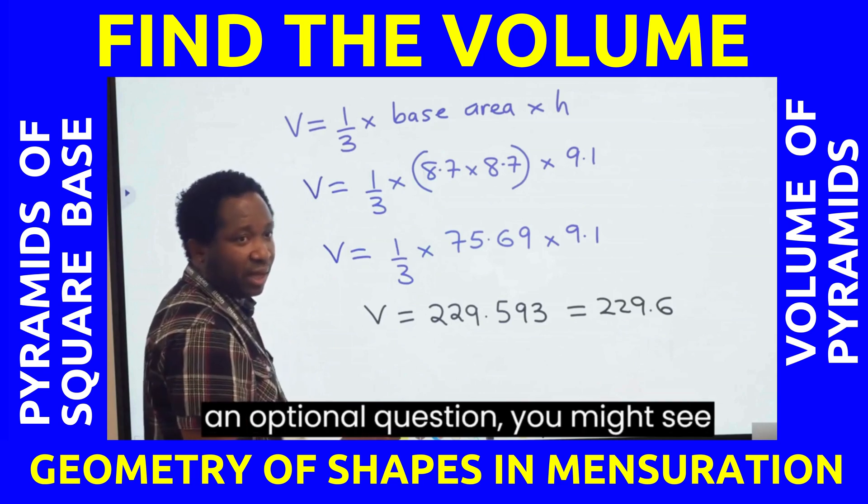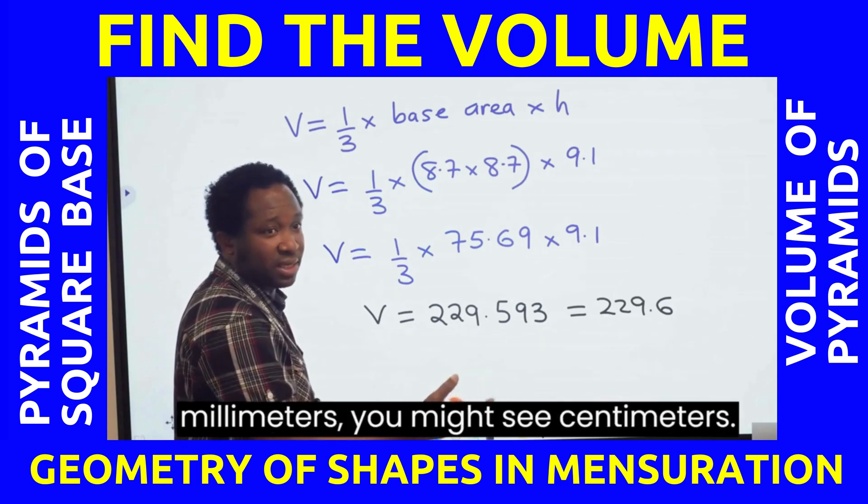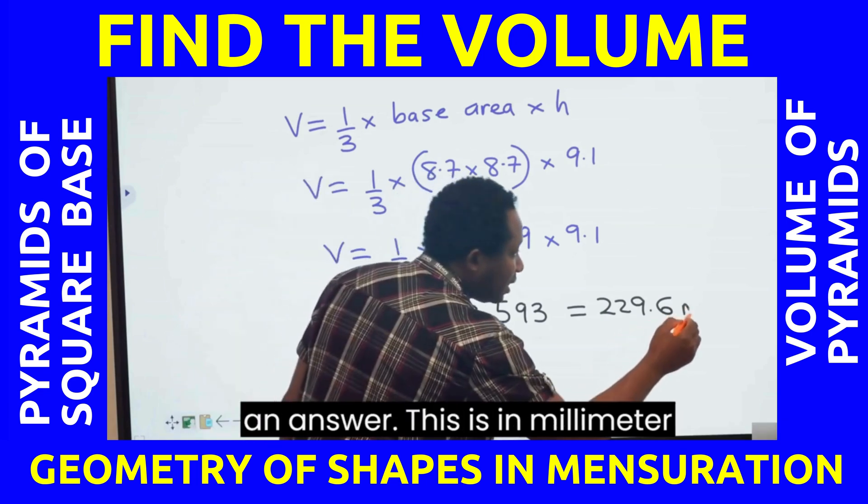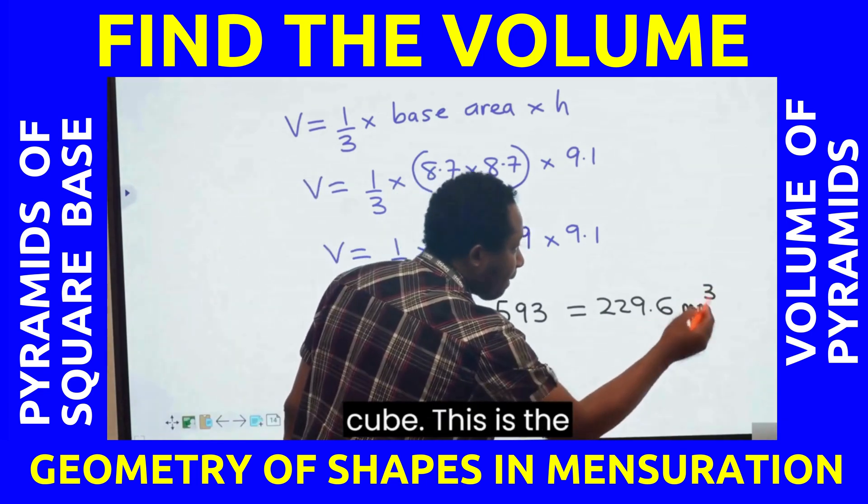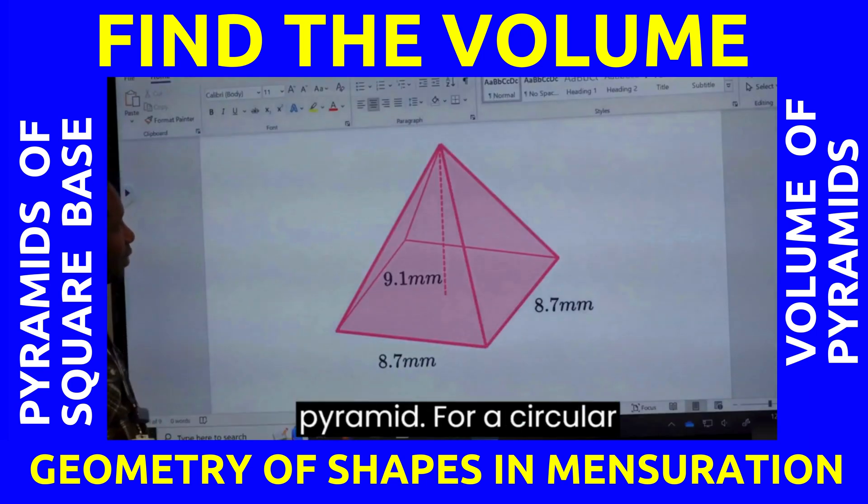If it is an optional question, you might see millimeters, you might see centimeters. So you observe clearly before you choose an answer. This is in millimeter cube. This is the volume for this square base pyramid.